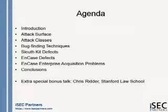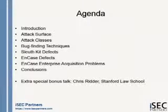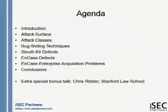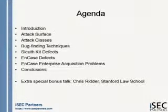We're specifically going to talk about bugs we found in the Sleuth Kit and Guidance EnCase, which we believe to be the premier open source and commercial tools for forensics disk analysis. Then we're going to talk about EnCase Enterprise — cryptographic analysis of how EnCase Enterprise works, and perhaps some things people need to think about when they use it, and that courts need to think about when they accept that evidence.